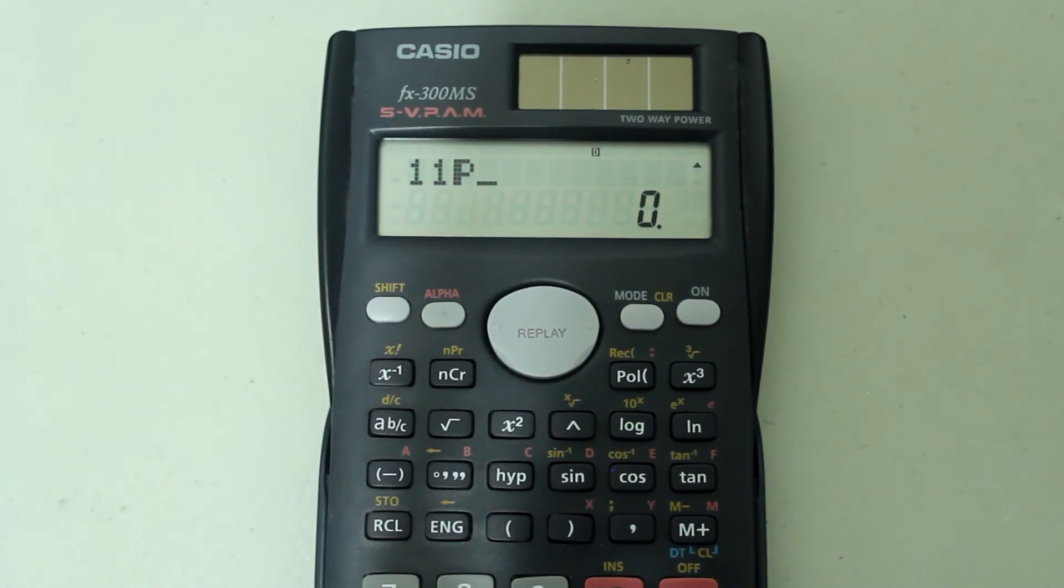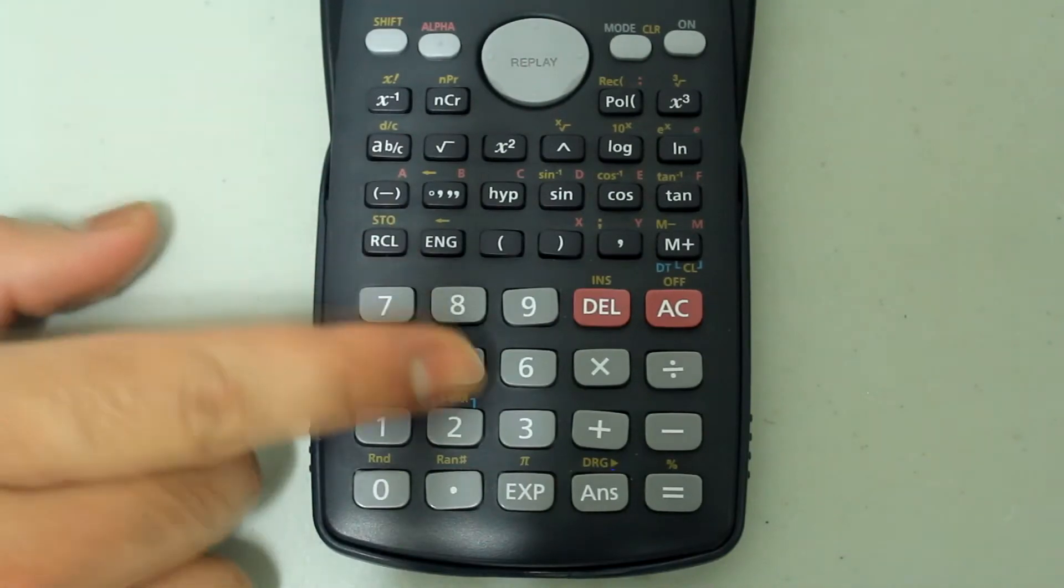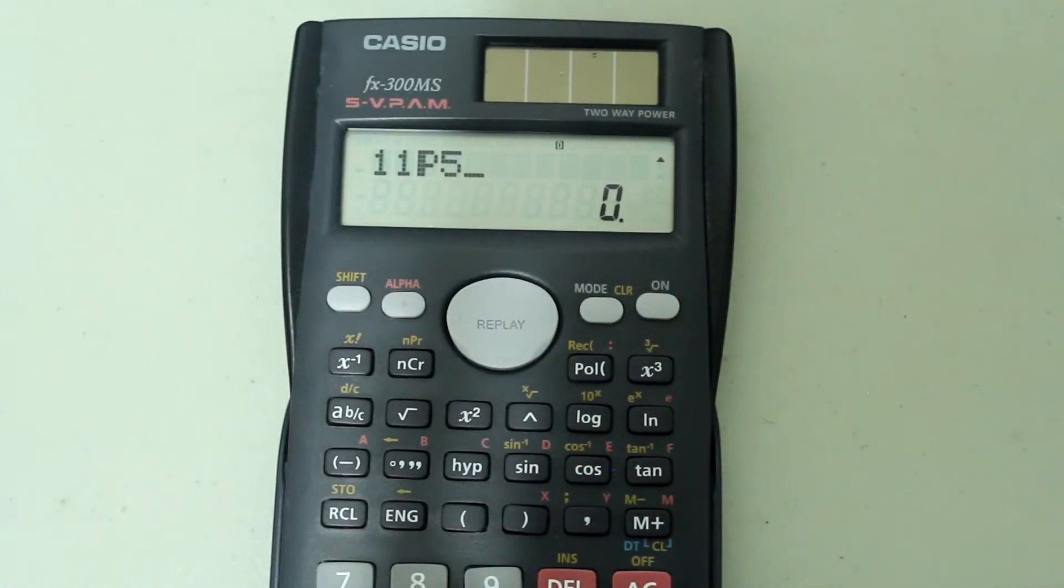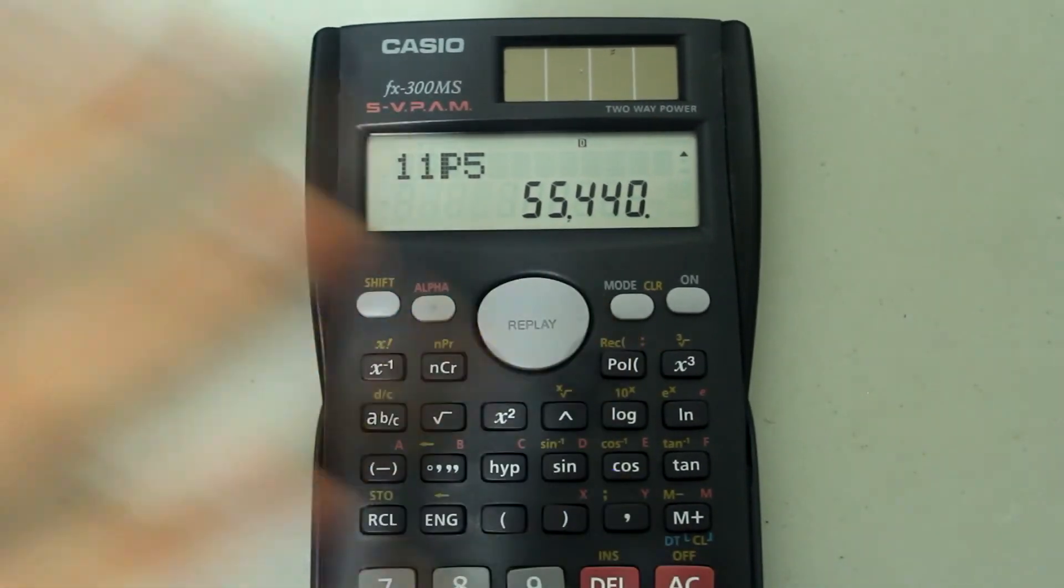So the entry looks like this so far. Now I'm going to type in the r value, which is 5 and the entry looks like this and press enter or equals. And there we have the answer.